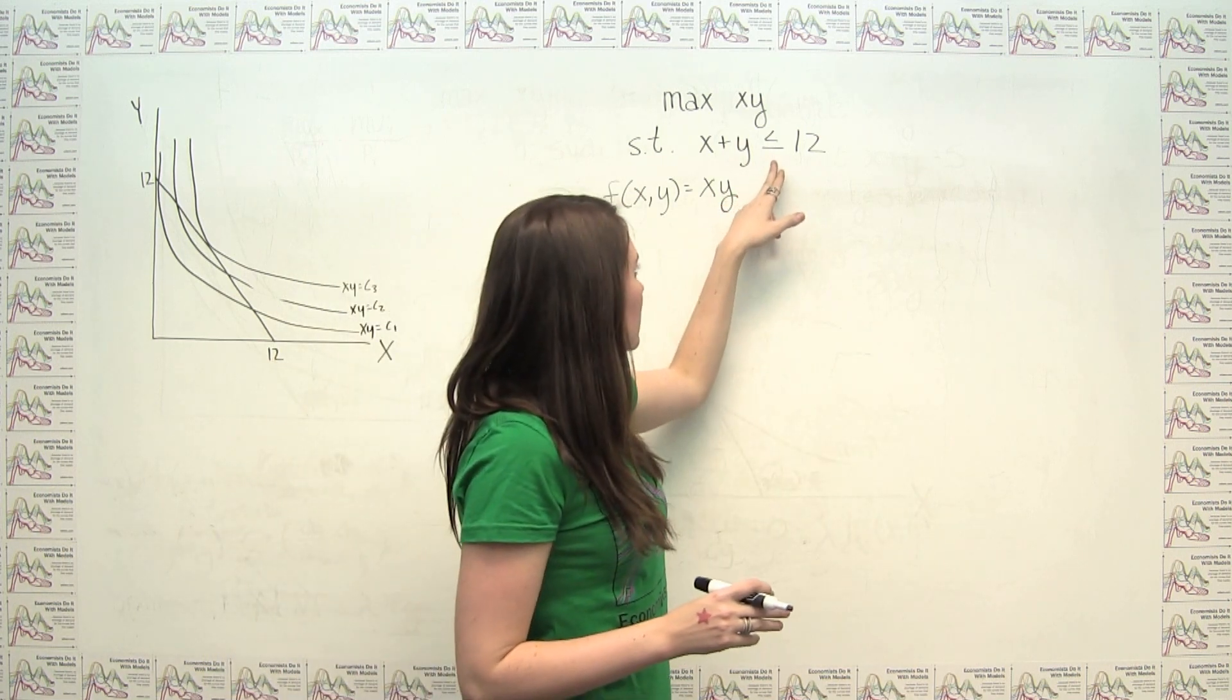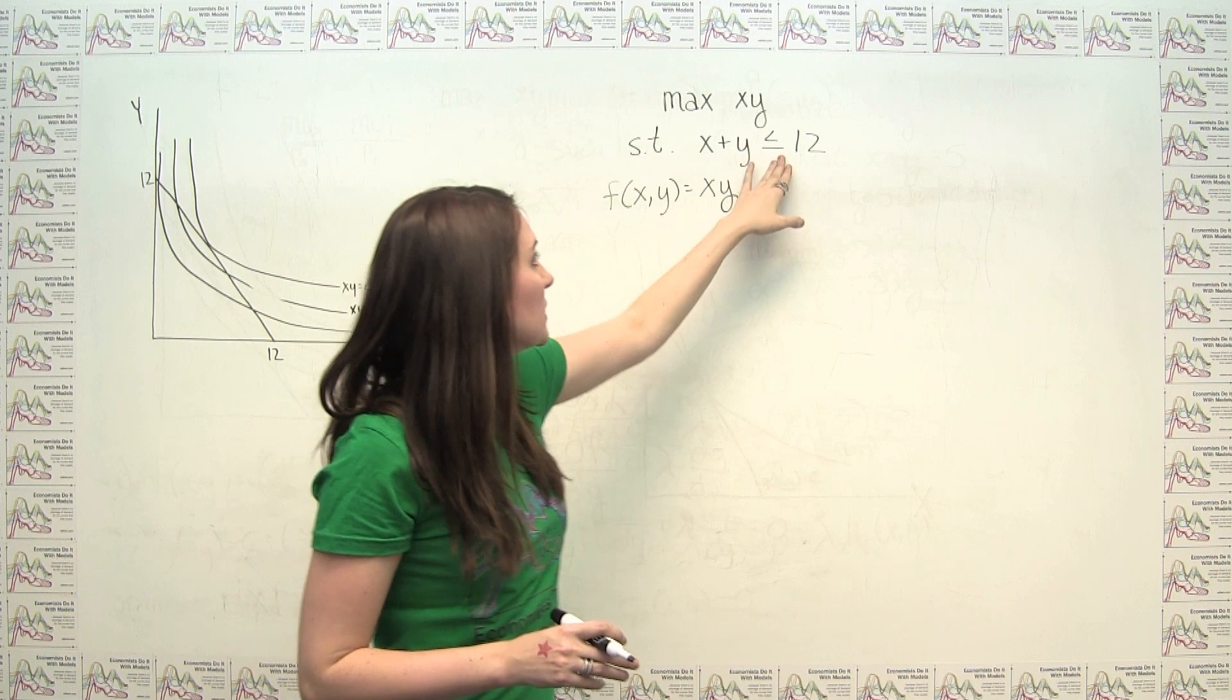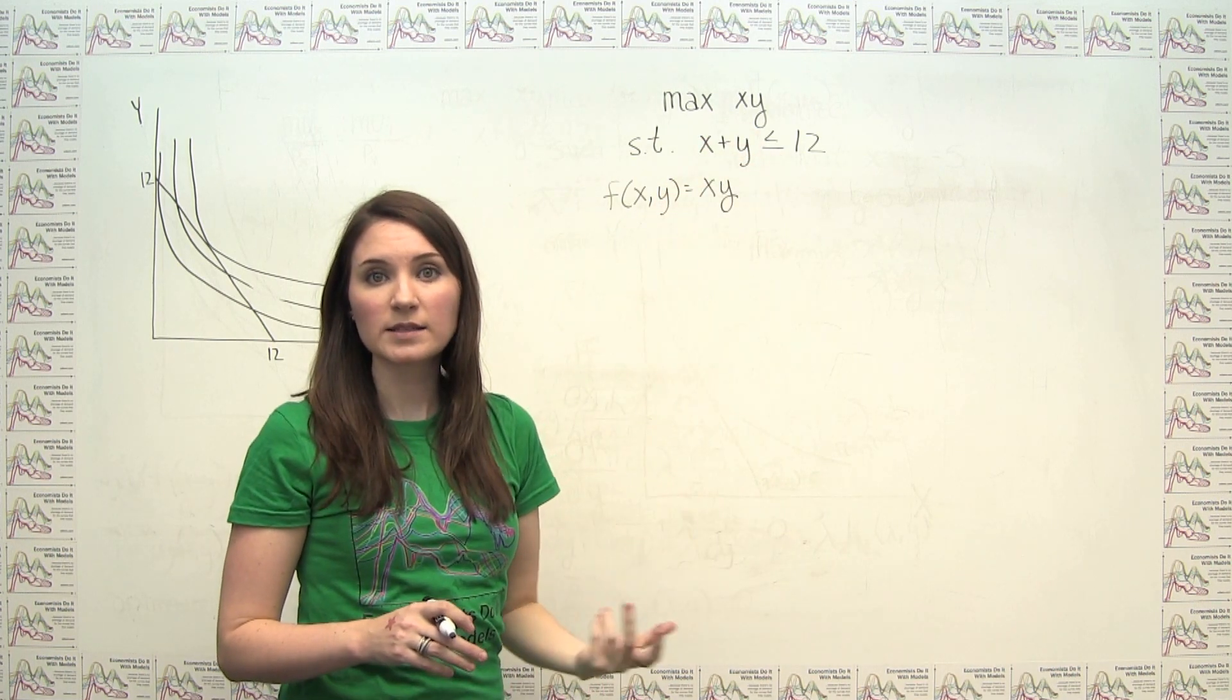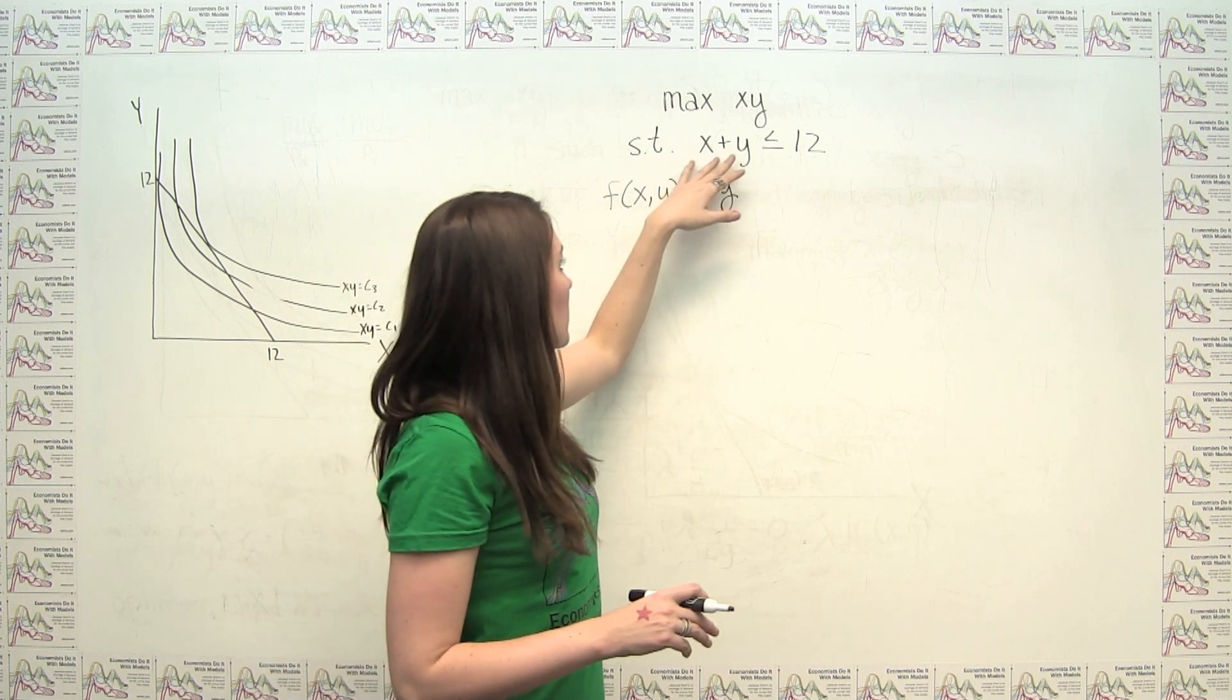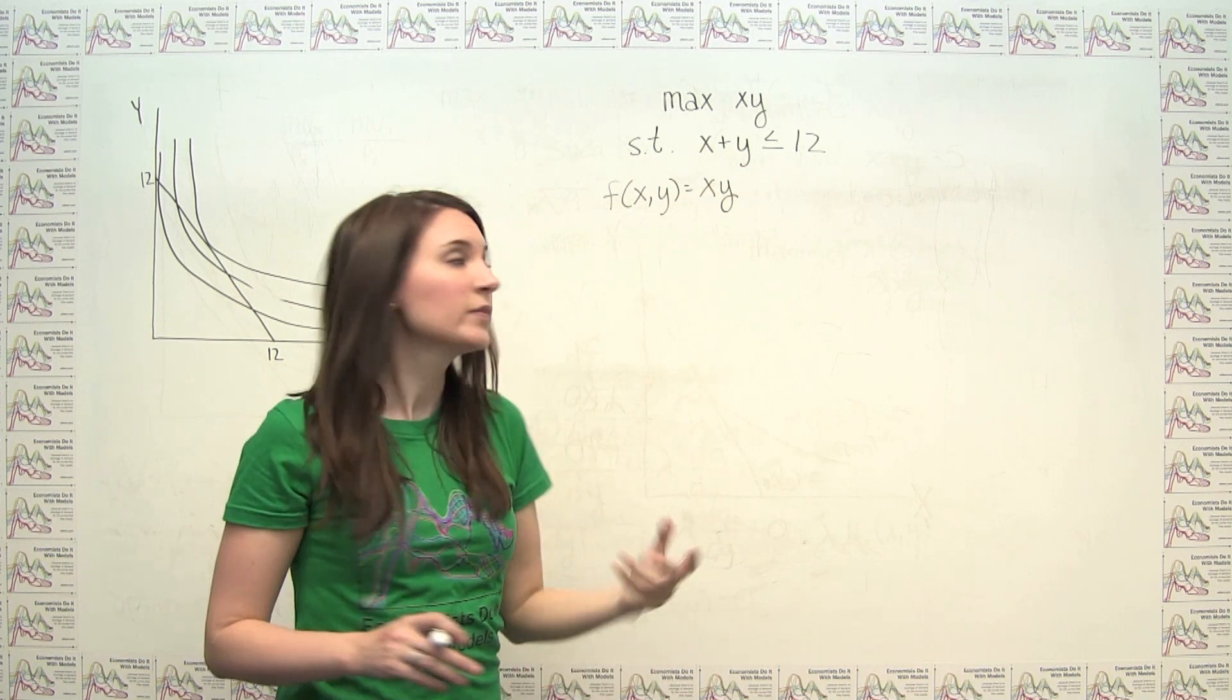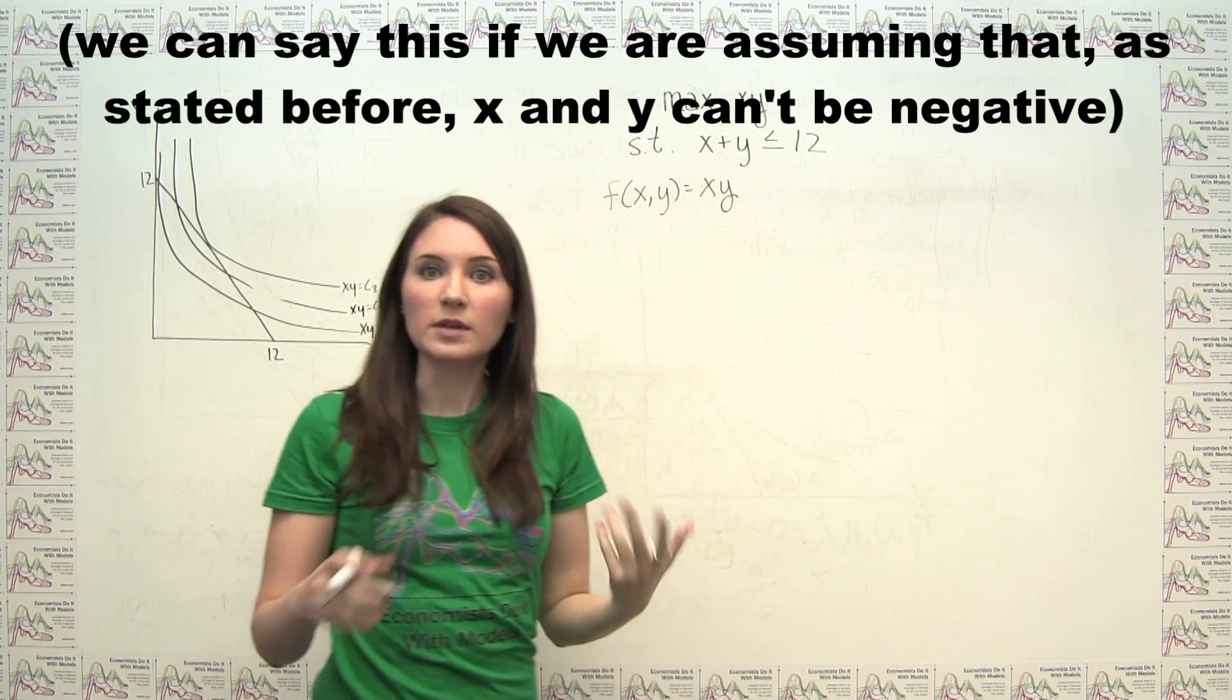Where here we have a less than or equal to going on. But we can make the argument that if we're looking to maximize this quantity x times y, we're going to want to use up all of these 12 units that we can. It's never going to be an optimal solution where x plus y is equal to 11 or something like that.